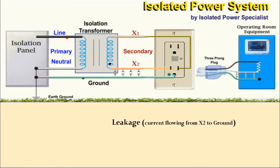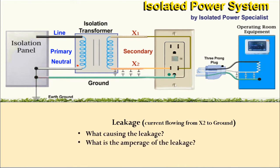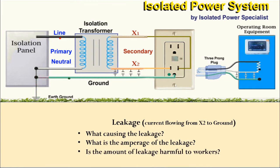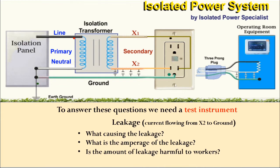Here, our system is working fine, but little do we know that X2 has started leaking to ground. What's causing the leakage? What is the amperage of the leakage? Is the amount of leakage harmful to workers? To answer these questions, we need a test instrument.